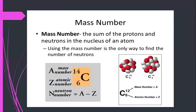Next we will study the mass number. There is a difference between the atomic number and the mass number. The sum of the atomic number (Z) and the number of neutrons (N) gives the mass number of an atom. The mass number is abbreviated as A, so: A = Z + N. Z is the atomic number, N is the neutron number, and A is the mass number.